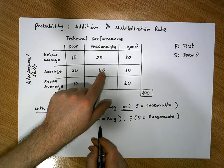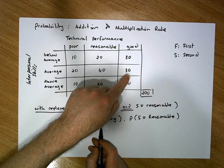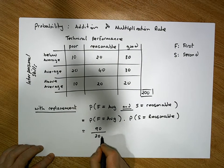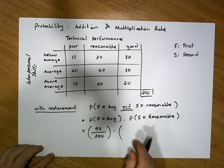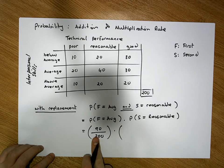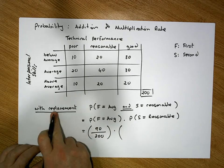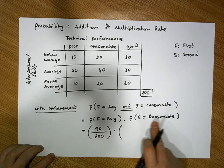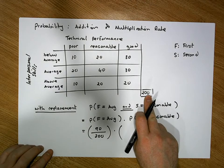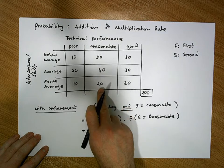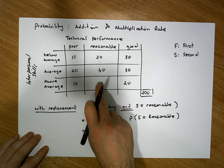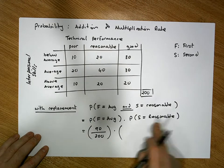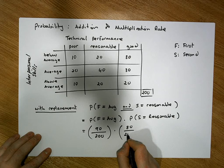The probability that the first person has average interpersonal skills: there are 20, 60, and 20 — wait, 60 plus 30 gives us 90 — so 90 chances out of 200. That probability is multiplied by the probability that the second selection is reasonable. Since it's with replacement, there are still 200 people, and 20 plus 40 plus 20 gives 80 with reasonable performance, so 80 chances out of 200.